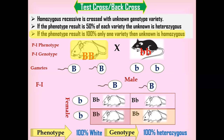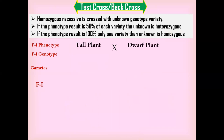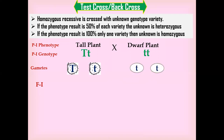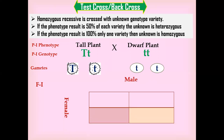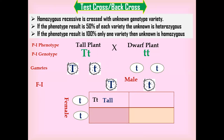We can understand the same concept using a plant example. If we take a tall plant and a dwarf plant — the tall plant is heterozygous and the dwarf plant is homozygous recessive, represented as lowercase t, lowercase t — the heterozygous tall plant produces two different types of pollen grains, while the female plant produces one type of ovule. In the F1 Punnett square, the ovule with lowercase t fertilizes with a pollen grain carrying capital T to produce a tall variety, or with lowercase t pollen to produce a dwarf variety.